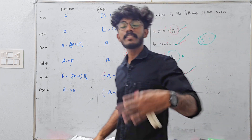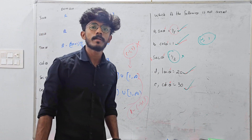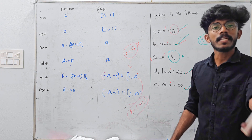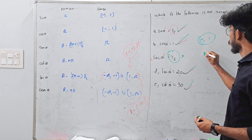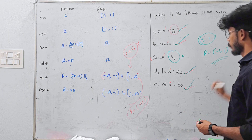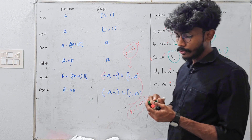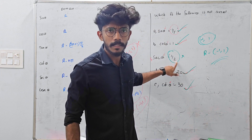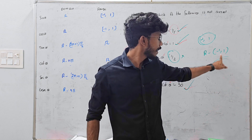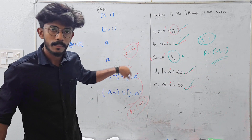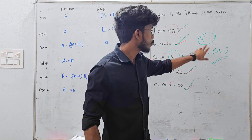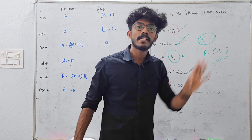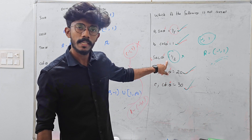The sec range equals minus infinity to minus 1 union 1 to infinity. So minus 1 by 2 is not in the sec range — it's between minus 1 and 1. The value minus 1 by 2 is not possible for sec theta. That option is not possible in the range. That is clear.